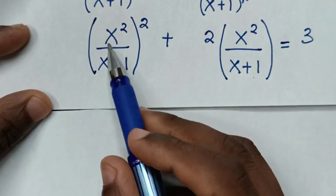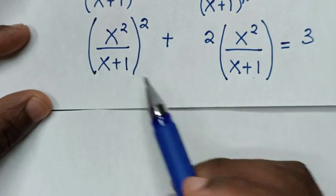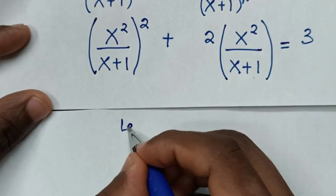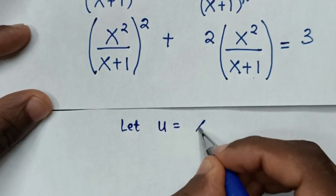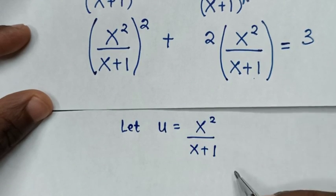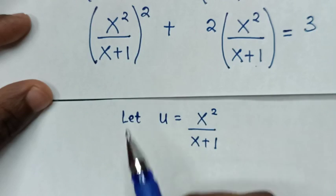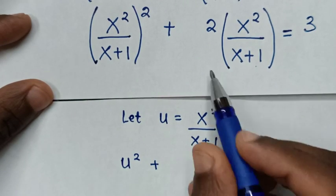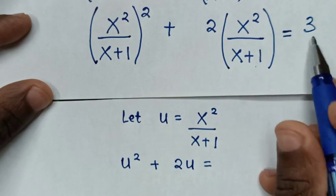From here x squared over (x plus 1) is common, so we let u equal to x squared over (x plus 1). Then from our equation it will be u squared plus 2u is equal to 3.